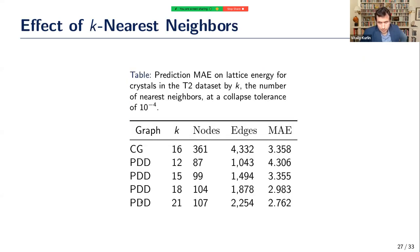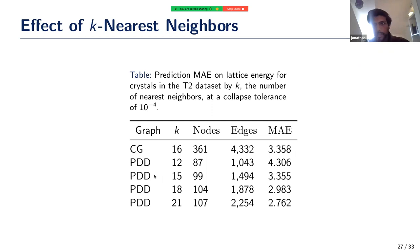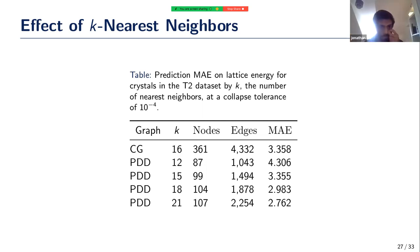A suggestion was made to include a PDD row with k equals 16 for direct comparison, which would be a slight improvement but in line with the existing results — a difference of about 0.03. The distinction was also clarified: 'larger' refers to the molecular unit having more atoms, not that crystals are larger in the infinite sense, which is why a higher k is needed to reach further from any central atom.